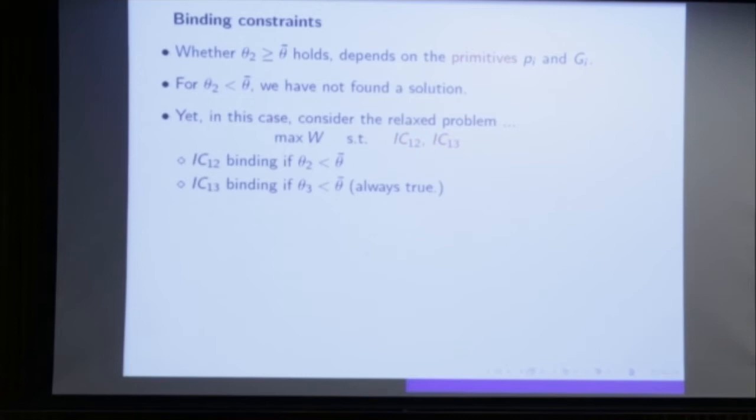Your next question is: with three types it works — what about four types? Five types? N types? After showing it for three types it took us half a year, then four types took three quarters of a year. We even did five types, and it always worked. The general challenge is: how do you find the right incentive constraints for arbitrary n?